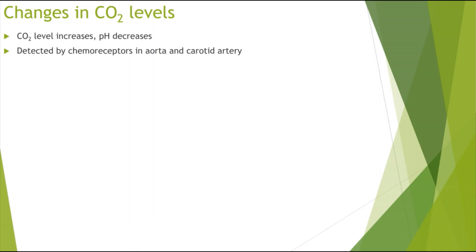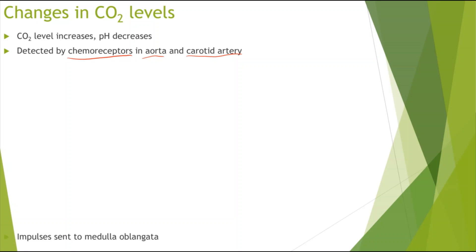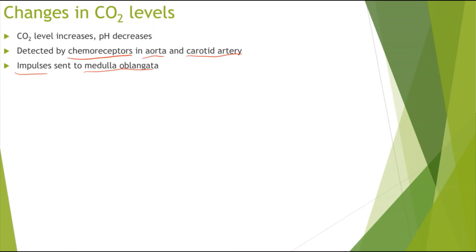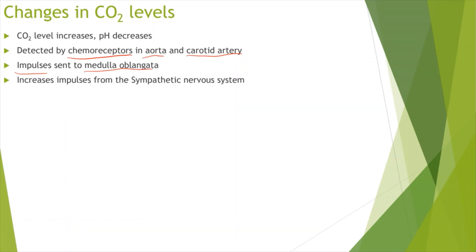This decrease in pH would be detected by the chemoreceptors, which are also located in the aorta and the carotid artery. Impulses would then be sent to the medulla oblongata.